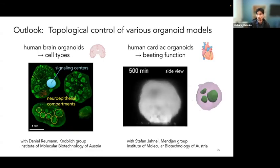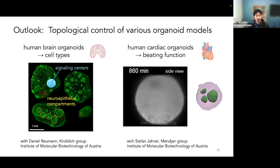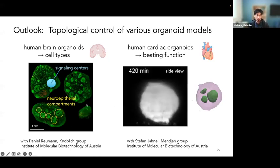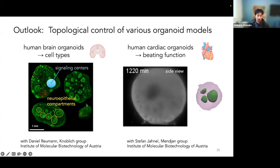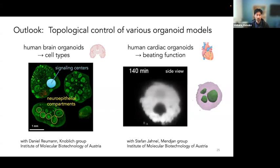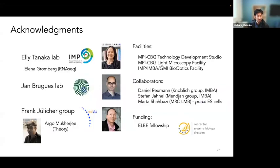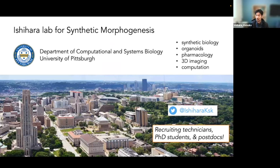As one slide for my future lab: I'm really interested in taking these quantitative imaging-based approaches to engineer the function and organization of organoids. We're looking into human brain organoids as well as cardiac organoids, really asking how we can engineer morphology and lead to novel physiological functions for these tissues. As a plug for my new group, I'm recruiting technicians, PhD students, and postdocs — please let me know if you're interested. Finally, I'd like to acknowledge the labs I was involved in during my postdoc: three groups at the Max Planck Institute in Dresden, as well as the Research Institute of Molecular Pathology in Vienna. Thank you very much.